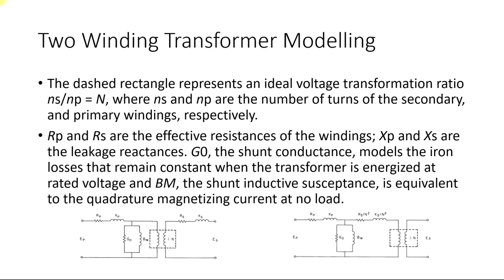In this lecture we are going to continue with system modeling. The next big asset in the system is transformers. Transformers can be of two types: the two-winding transformer and the three-winding transformer. First, let us discuss two-winding transformer modeling. A typical transformer has two windings — the primary winding and the secondary winding. To model a transformer mathematically, we first convert it from its physical structure into an equivalent circuit.